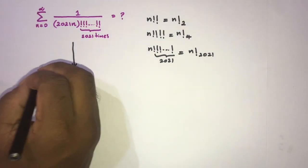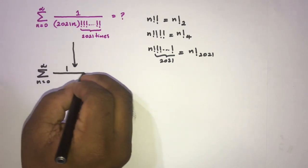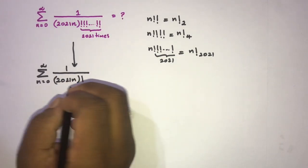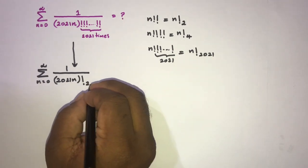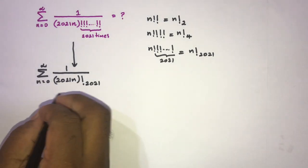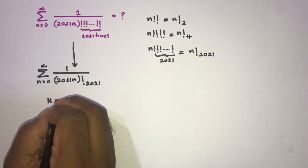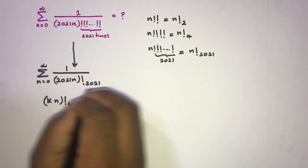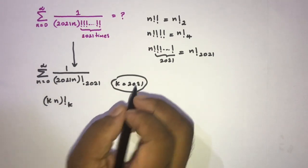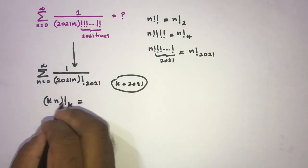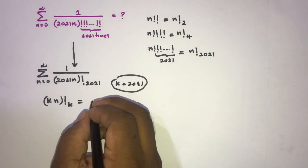Using this notation, we can write our question as the sum from zero to infinity of one over (n factorial) to the 2021. Now if we generalize this, we can use k times n factorial to the k. Instead of k we can take 2021, so if 2021 equals k, we write (n factorial) to the k.